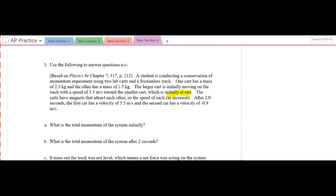The carts have magnets that attract to each other, so the speed of each car increases. After 2 seconds, the cart has a velocity of 5.5, and the second cart has a velocity of negative .9 meters per second. What is the total momentum of the system initially? Well, momentum equals mv.